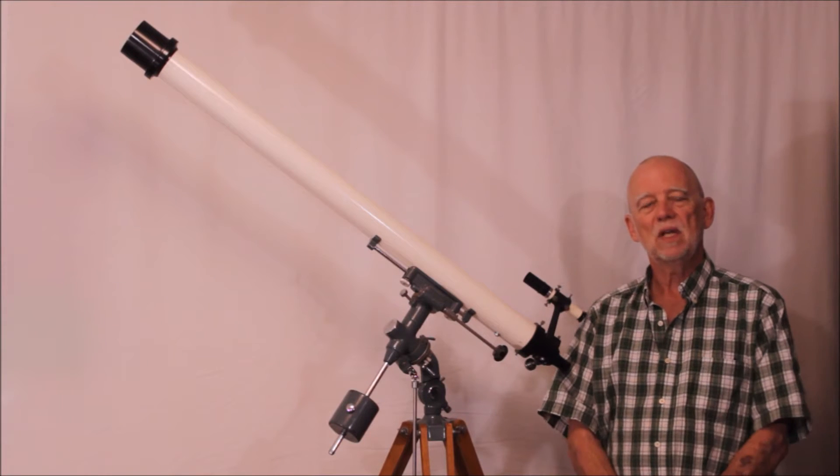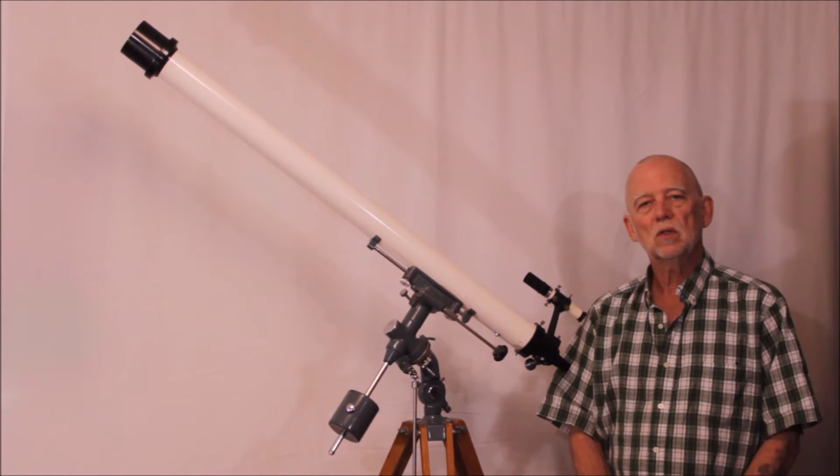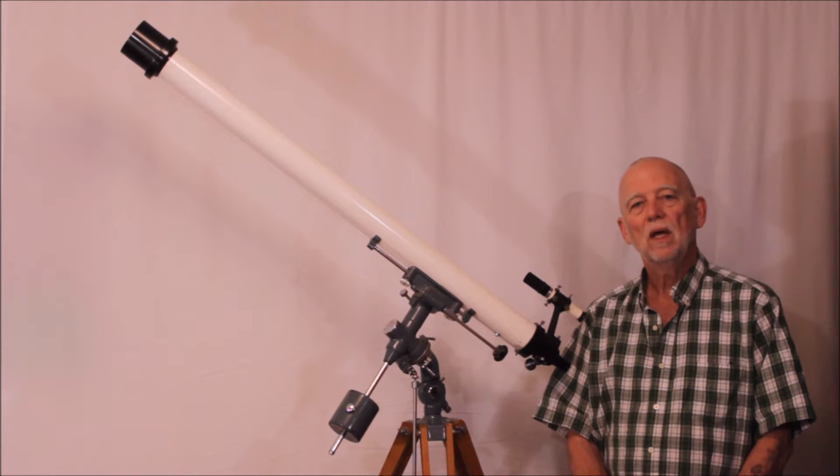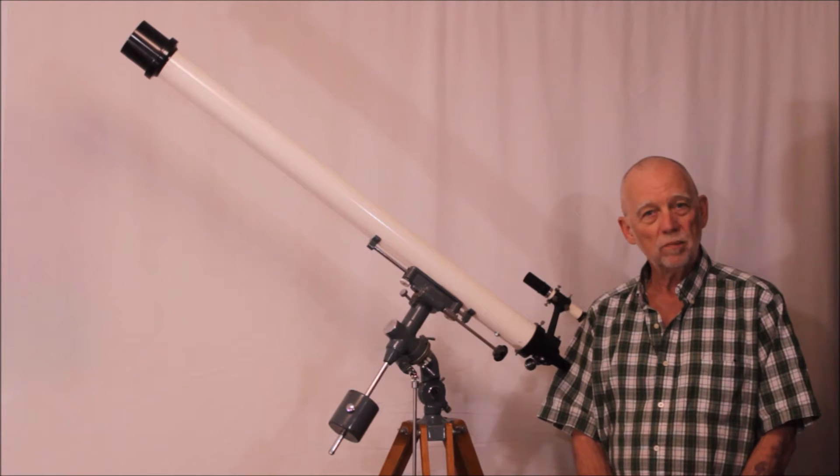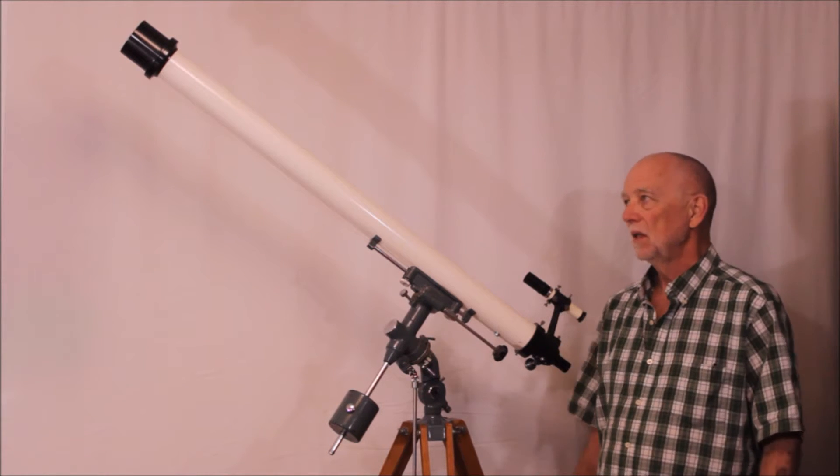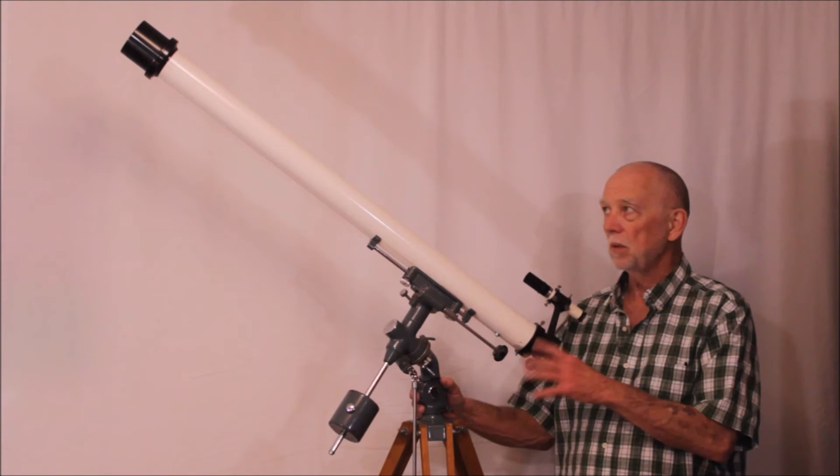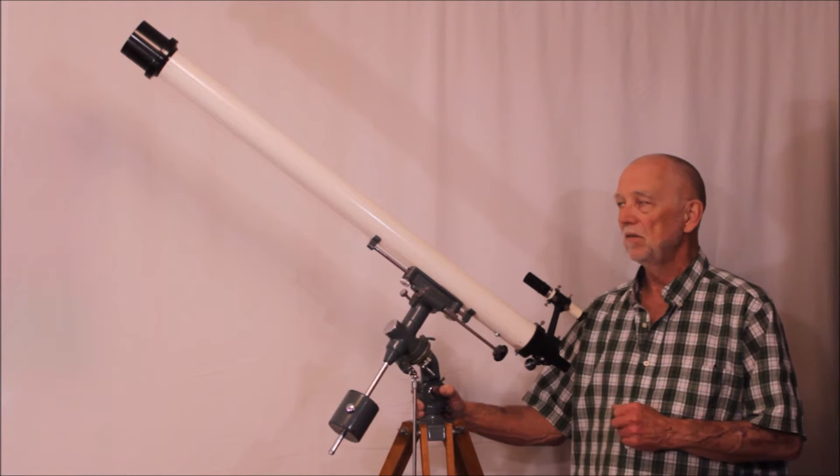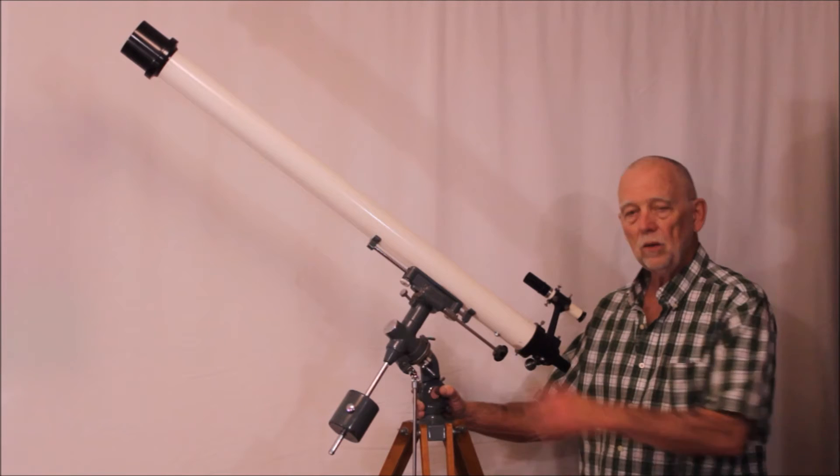Hi, my name is Dave. I would like to show you this GOTO 16mm F20 1200mm focal length telescope from the 1950s, probably early 50s, maybe late 50s, on an equatorial mount.